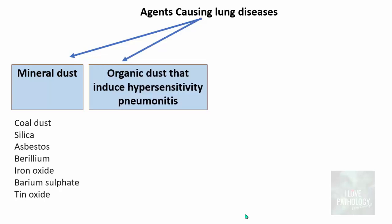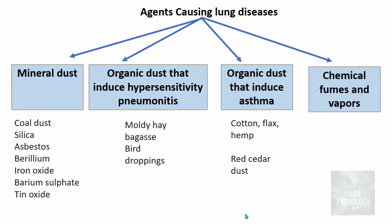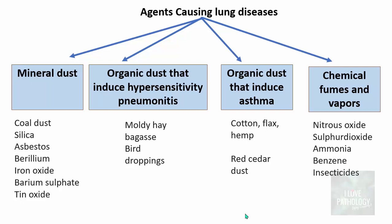The second category is organic dust that induces hypersensitivity pneumonitis, which includes moldy hay, bagasse, and bird droppings. Thirdly, organic dust that induces asthma, which includes cotton, flax, hemp, and red cedar dust. Lastly, chemical fumes and vapors, which include nitrous oxide, sulfur dioxide, ammonia, benzene, and all forms of insecticides.